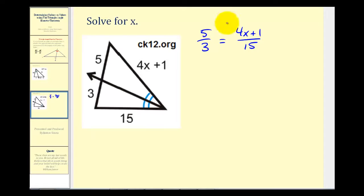So now we can cross multiply. 3 times 4X plus 1 must equal 5 times 15, that's 75. Now we'll distribute and solve for X.